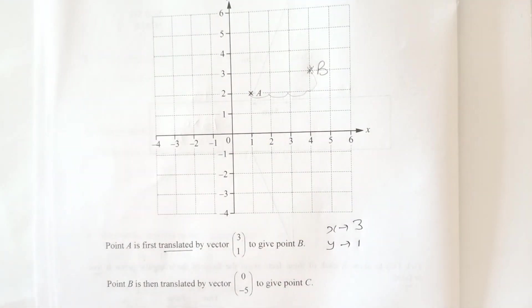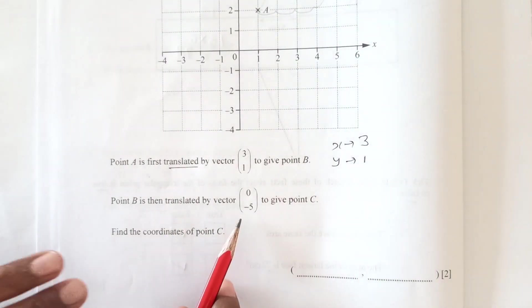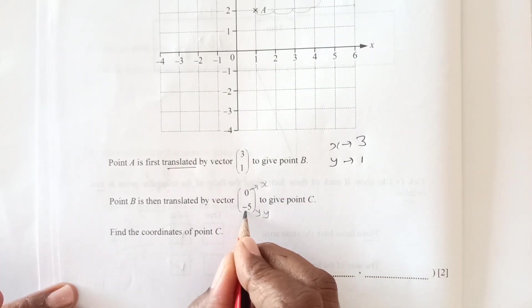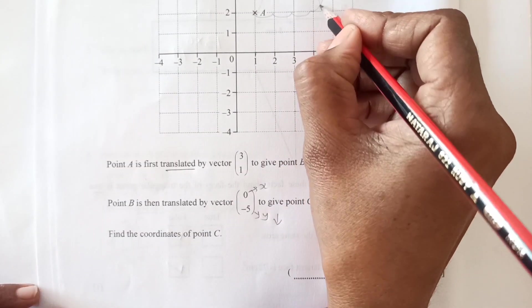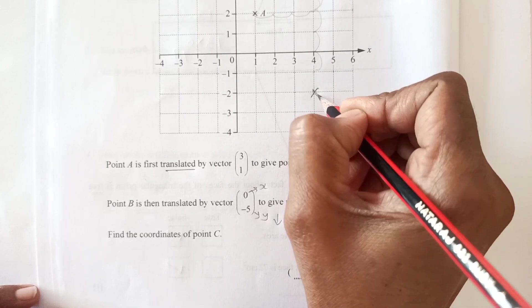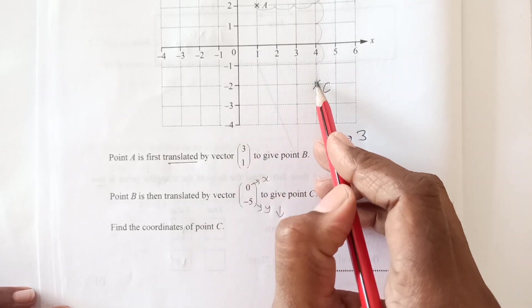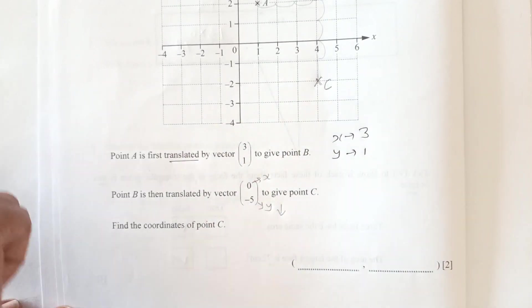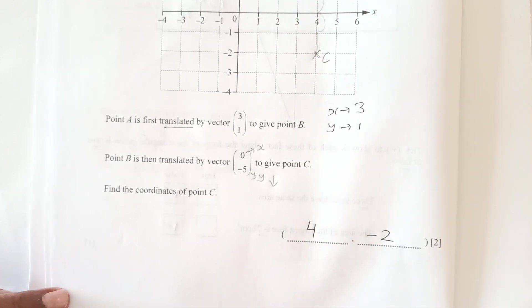Then next step, this one is B is then translated by vector 0, negative 5. 0, negative 5 means x, there is no movement of x and y is negative, so it is going to be going towards down 5 units down: 1, 2, 3, 4 and 5. So this is now C. So let's see the coordinates going towards x axis. If you move there it is from 0 to 4. This is 4 and negative 2. So final answer is 4 and negative 2.